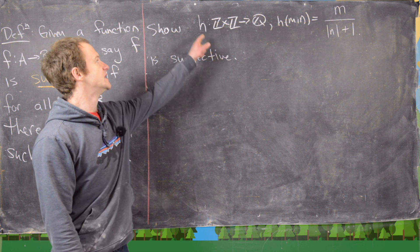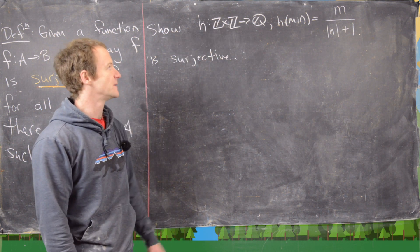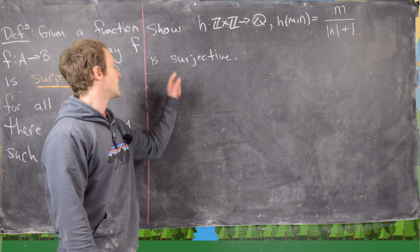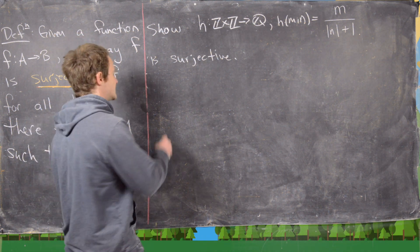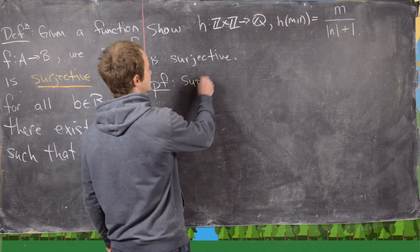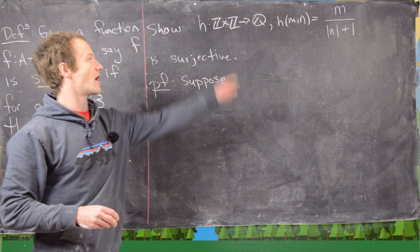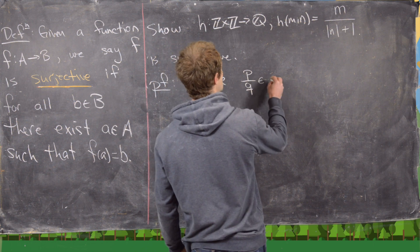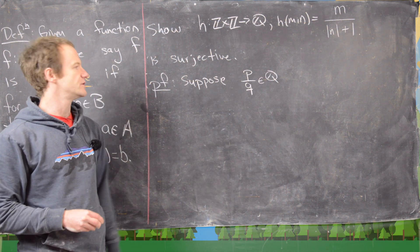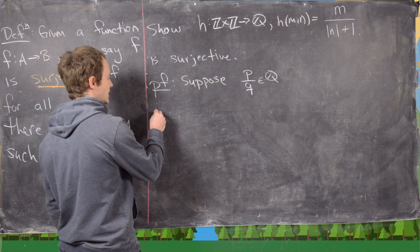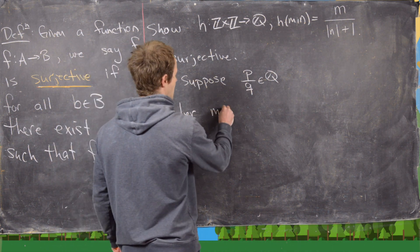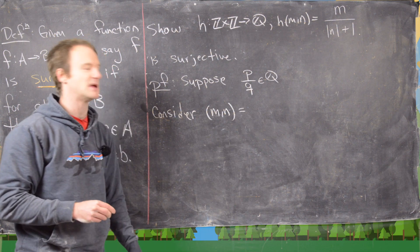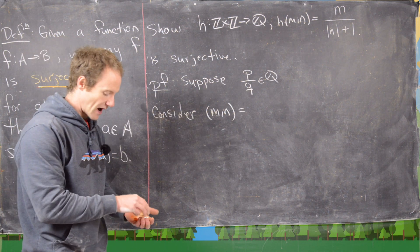For our final example, consider the function h from ℤ × ℤ to ℚ defined by h(m, n) = m / (|n| + 1). We want to show this function is surjective using the same outline. Suppose we have some element from the codomain — that is, from ℚ. We can always write elements of the rational numbers as p/q, and we use the structure of the rational numbers. We want to find m, n such that h(m, n) = p/q.